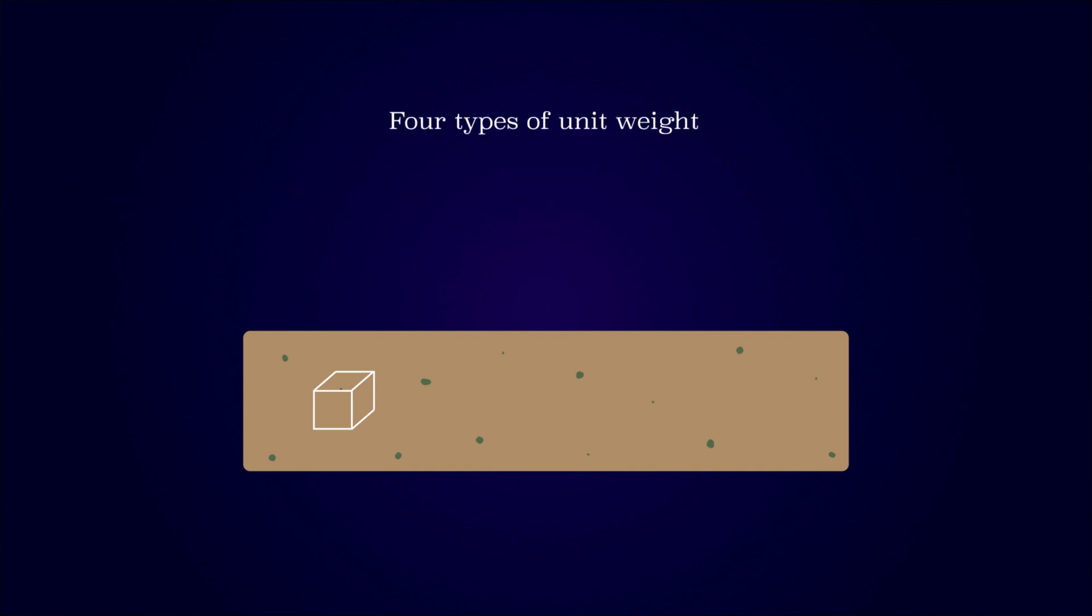We primarily address four distinct types of unit weight: bulk, dry, saturated, and effective. The selection of the appropriate unit weight for a specific geotechnical challenge depends upon the properties of the soil and the position of the water table.